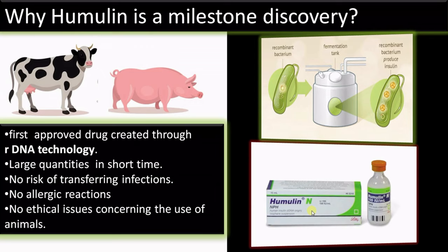Large quantities can be produced within a short time as the demand for insulin is on the rise for treating diabetes. There is no risk of transferring infections, no allergic reactions associated with cow and pig insulin, and no ethical issues — especially slaughtering issues concerning the use of animals. All these problems are avoided with the development of humulin or recombinant insulin.